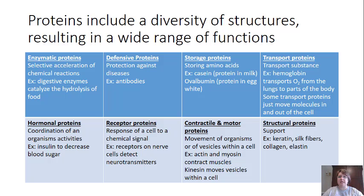The seventh type is contractile or motor proteins, most commonly used for movement. This includes flagella or cilia, but also within your muscles you have two contractile proteins, actin and myosin, that help you contract your muscles. It could also be a smaller protein within a cell that moves vesicles — a good example is the motor protein kinesin. The eighth and last major function is structural proteins, which form support. Keratin is a good example — our nails, hair, and porcupine quills are made of keratin. Silk fibers from spiders, and collagen and elastin found in our bodies to help support our skin, are also structural proteins.